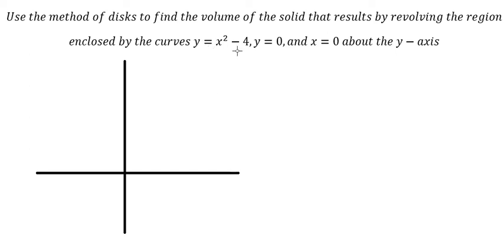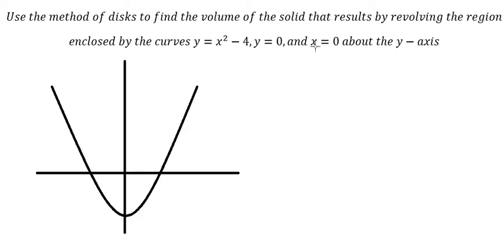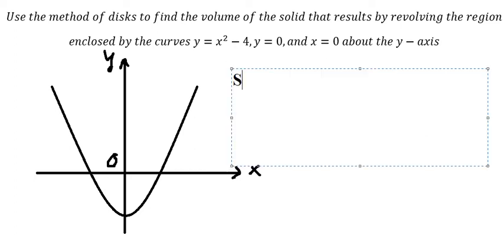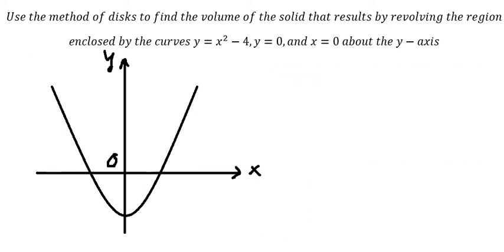We have y equal to x squared minus four, and the graph should look like this. We have x equal to zero here, and y equal to zero here. The region we concentrate on is this one. Because if we look at both sides, they are symmetric, so I will choose this side. We know that this is revolved about the y-axis.